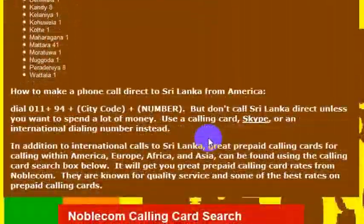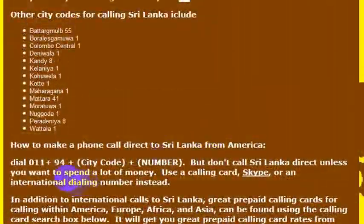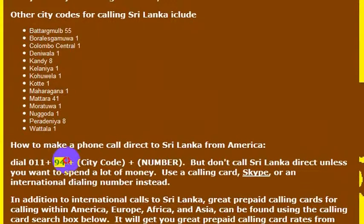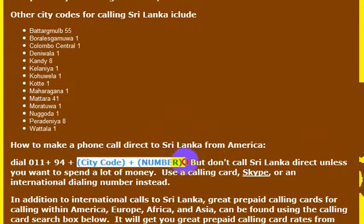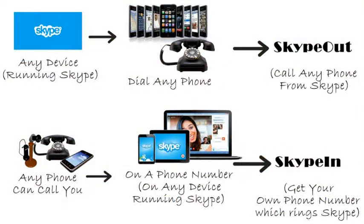If you're wanting to call Sri Lanka from the United States, you would dial 011, which is the international dialing code from the United States, then you would dial 94, which is the country code for Sri Lanka, and then the phone number that you're trying to reach. Again, the country code for Sri Lanka is 94.